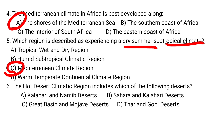Question number six: The hot desert climate region includes which of the following deserts? A. Kalahari and Namib deserts. B. Sahara and Kalahari deserts. C. Great Basin and Mojave deserts. D. Thar and Gobi deserts.